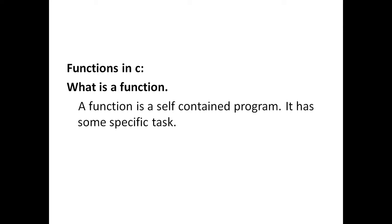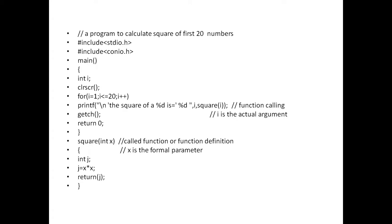We will see the program. This is a program to calculate the square of your first 20 numbers. How we write is #include stdio.h, #include conio.h. As we have explained earlier, whenever you write a program you have to include these two header files compulsory. After that, main function, curly braces, int i—i is an integer variable—clear the screen.